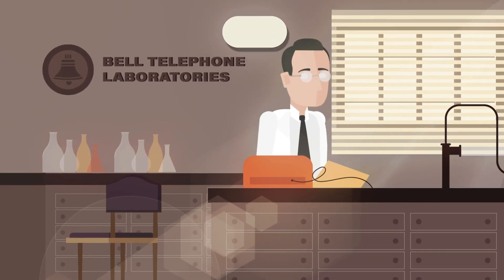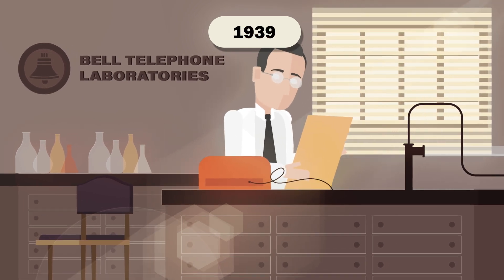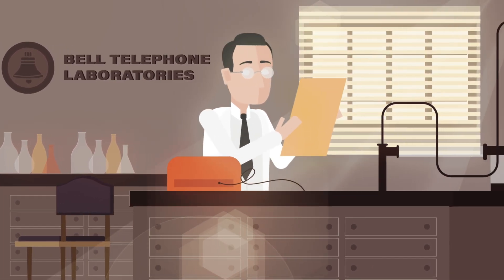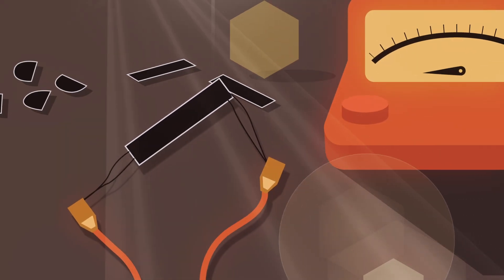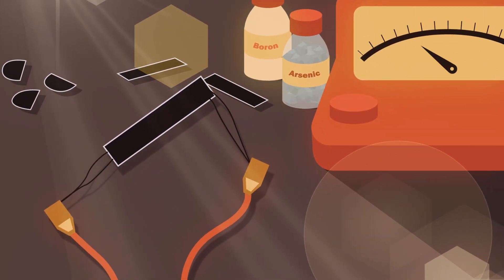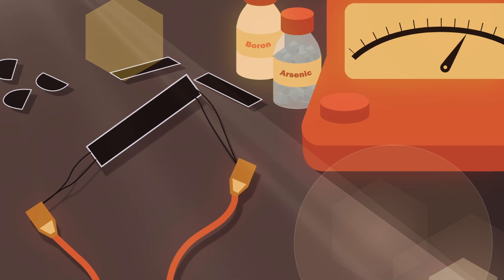The next great advance came from Russell Shoemaker Ohl, almost by accident, while he was studying the semiconductor properties of some silicon samples. Ohl discovered that by adding certain impurities to this material, a strong electric current was generated.